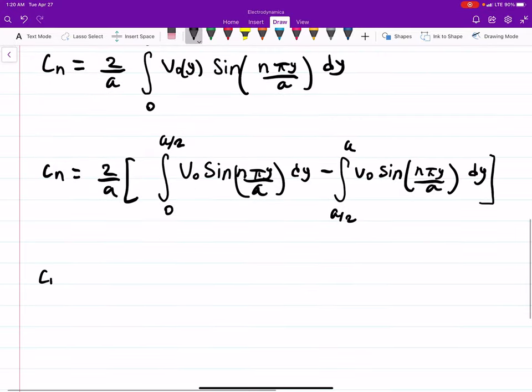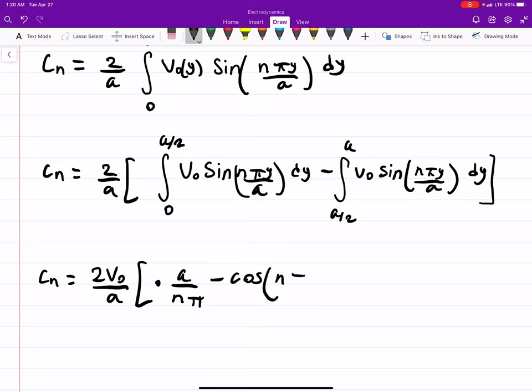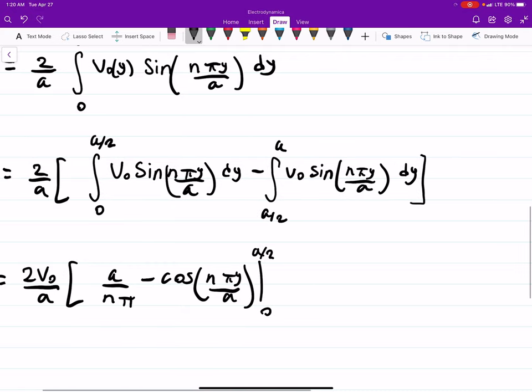So we can say c_n is then equal to 2V₀ over a. So we're going to have to do times a over nπ, negative cosine of nπy over a evaluated from 0 to a over 2, plus a over nπ, so we're doing a u-substitution, cosine of nπy over a, evaluated from a over 2 to a.